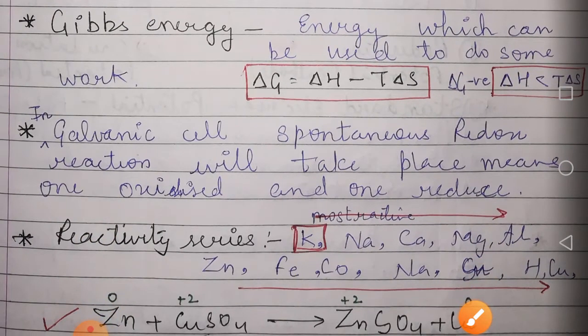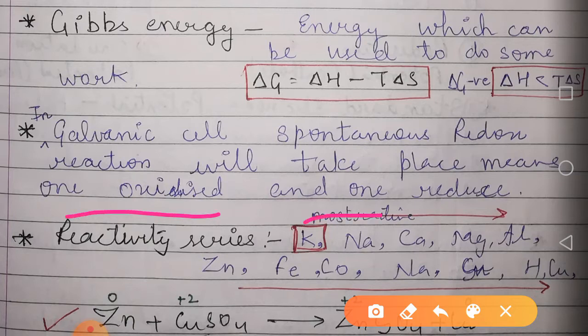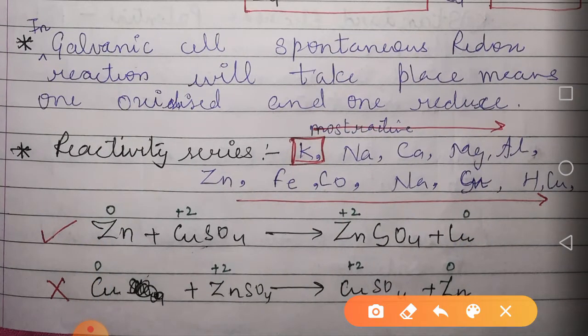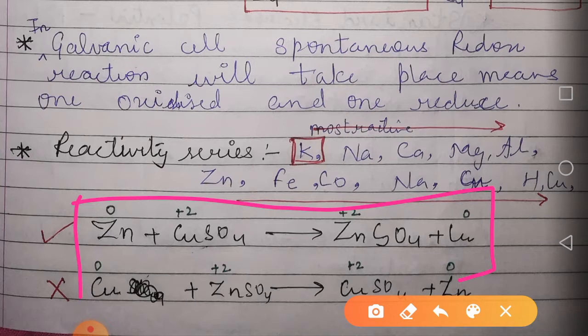In a galvanic cell, spontaneous redox reactions take place — one species is oxidized and one is reduced. To understand which reaction occurs, we refer to the reactivity series. These two reactions are possible in one cell — let's find out how.